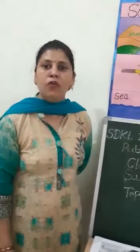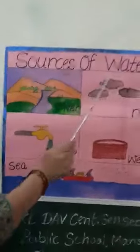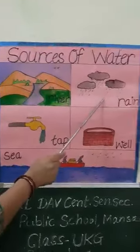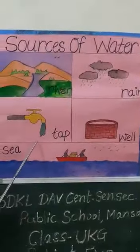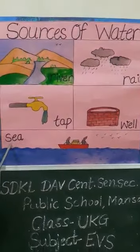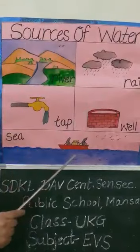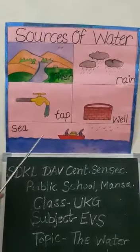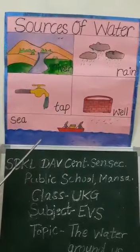Now, you can tell me where we get water. Where do we get water from? Yes, there are different sources of water. Sources of water: river, rain, tap, well, and sea. These are the different sources of water. We get water from these sources.